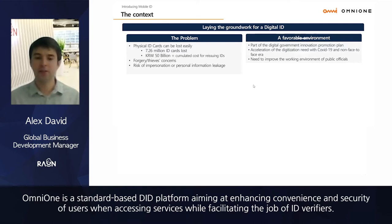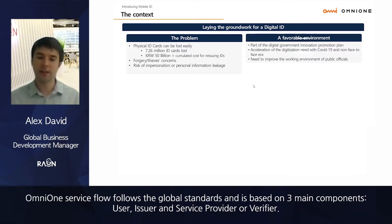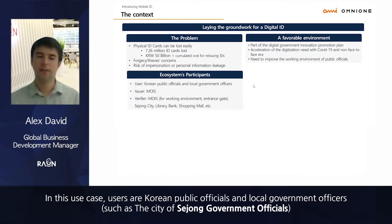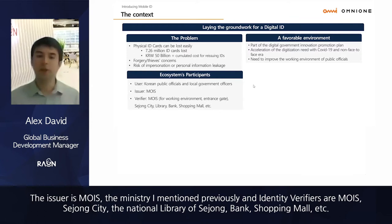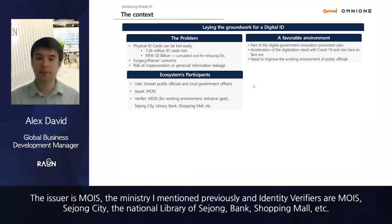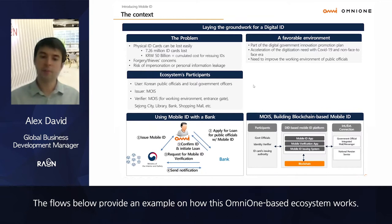OmniOne is a standard-based DID platform aiming to enhance convenience and security for users when accessing services, while facilitating the job of ID verifiers. OmniOne's service flow follows global standards and is based on three main components: user, issuer, and service provider. In this use case, users are Korean public officials and local government officers, such as City of Sejong officials. The issuer is MOIS, and identity verifiers include MOIS, Sejong City, the National Library of Sejong, a bank, and a shopping mall.